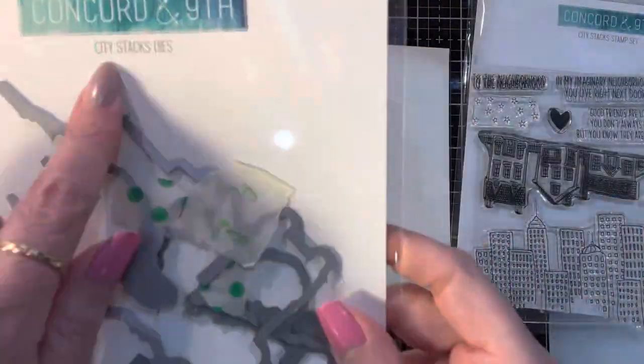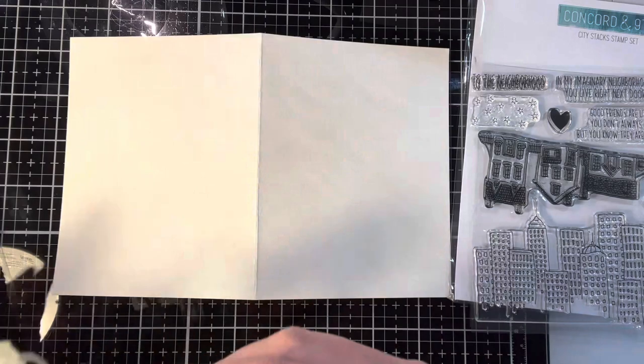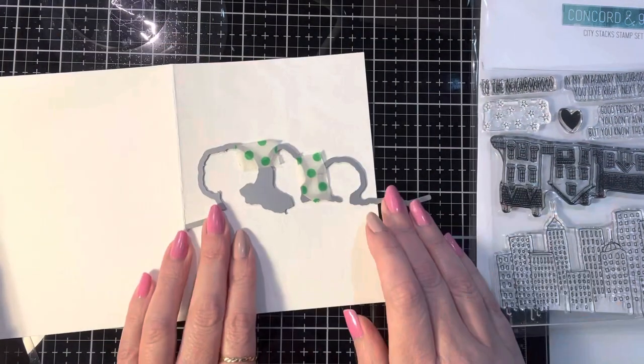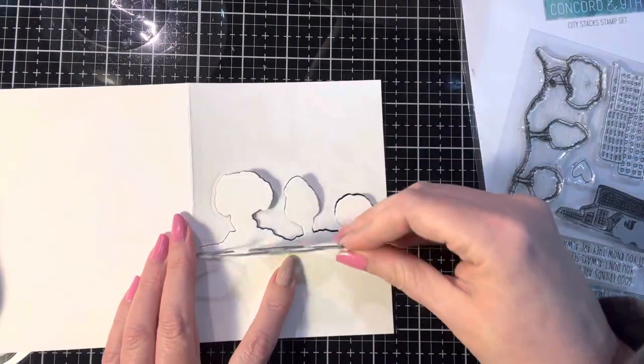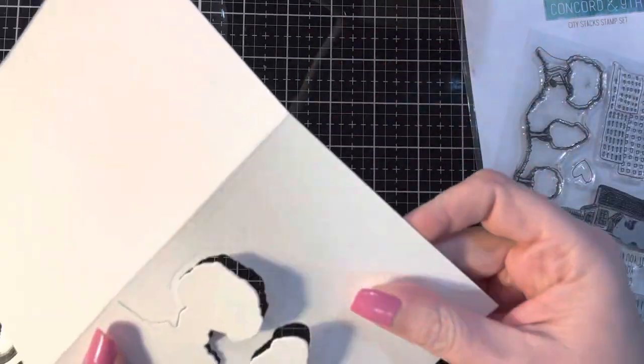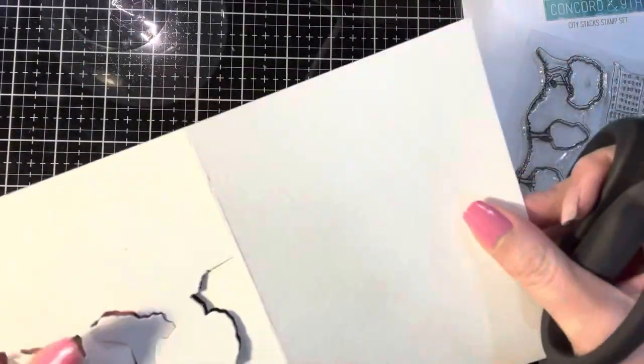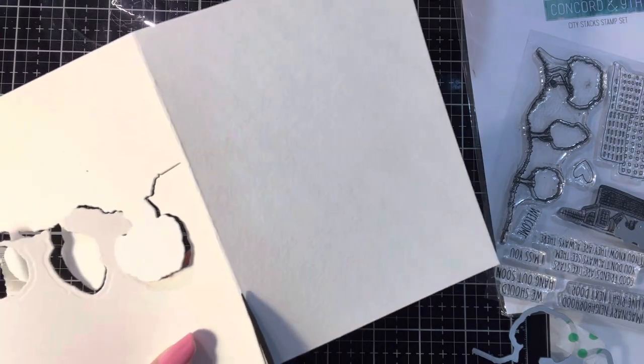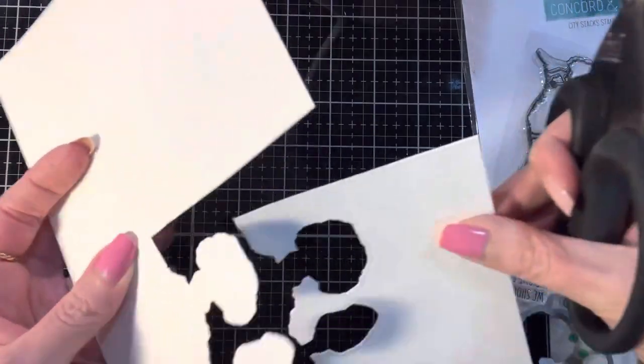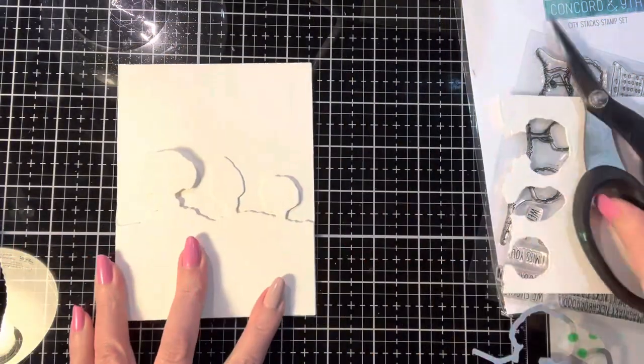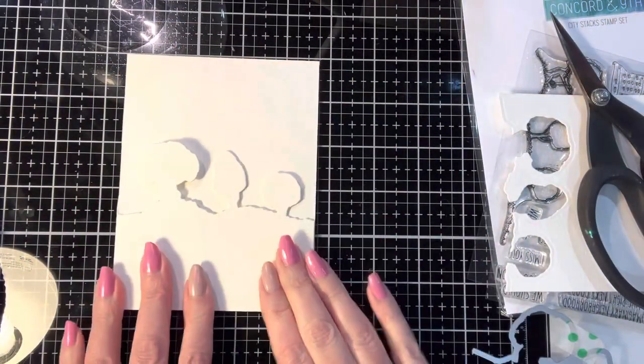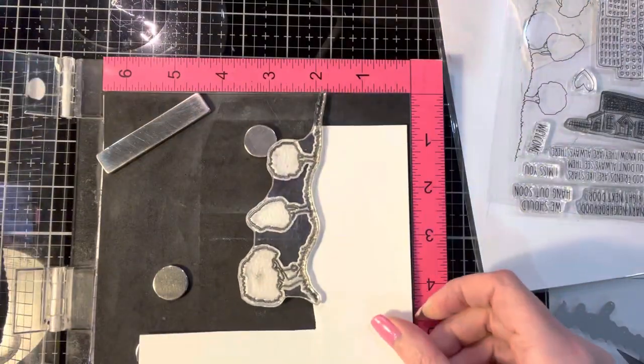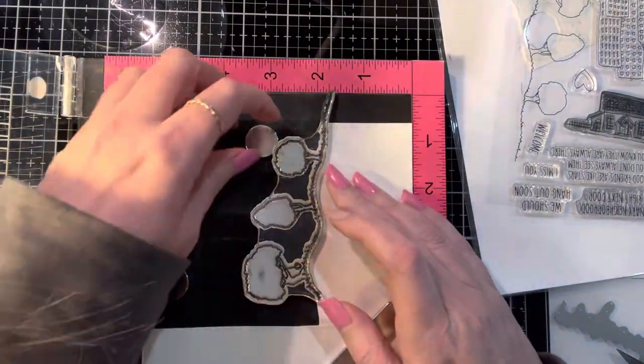I have a piece of Canson XL watercolor paper that measures 8.5 by 5.5 scored at 4.25 to make an A2 size card. You'll see there that I put the tree line die down and held it into place with some washi tape, ran it through my die cutting machine and then cut off the excess at the top. So we're going to call this the mullet card because it's shaped in the front but it's a full card in the back.